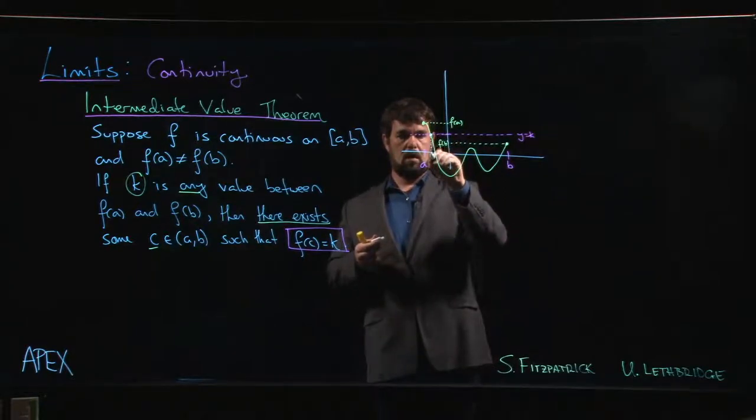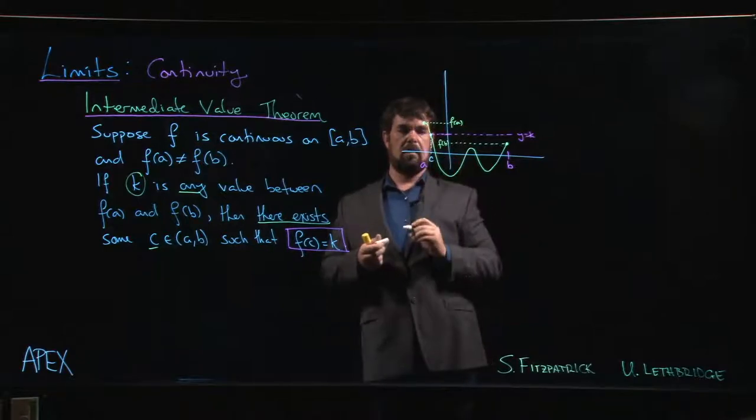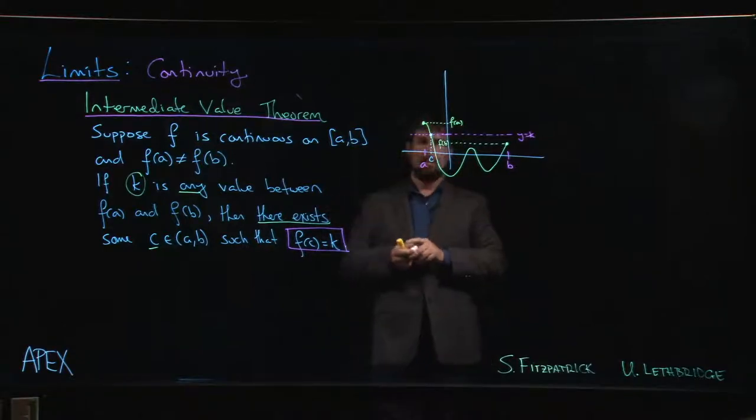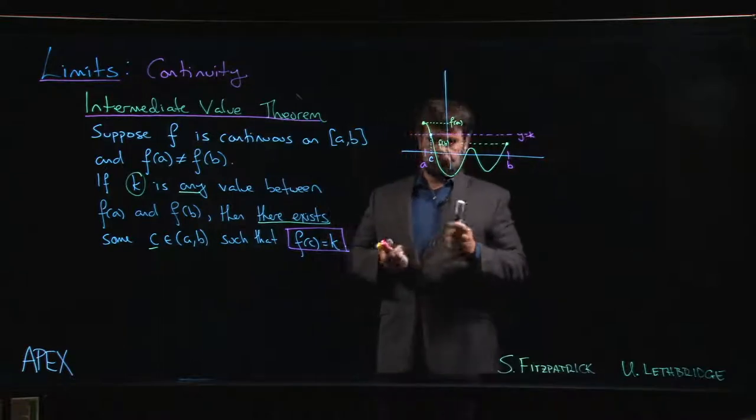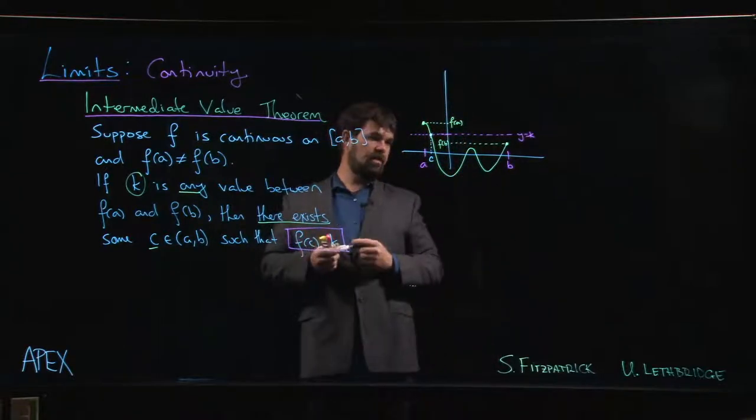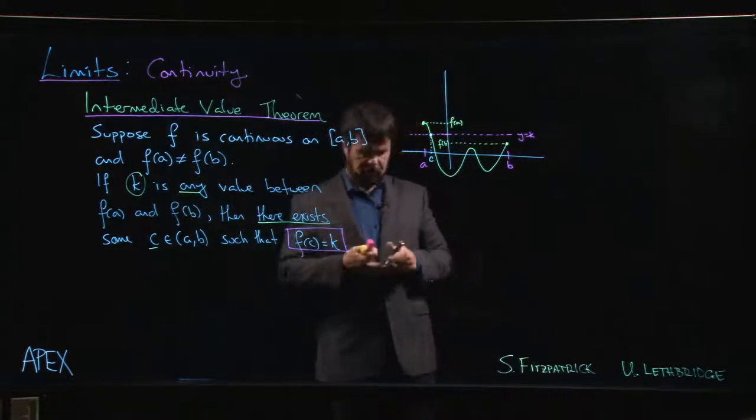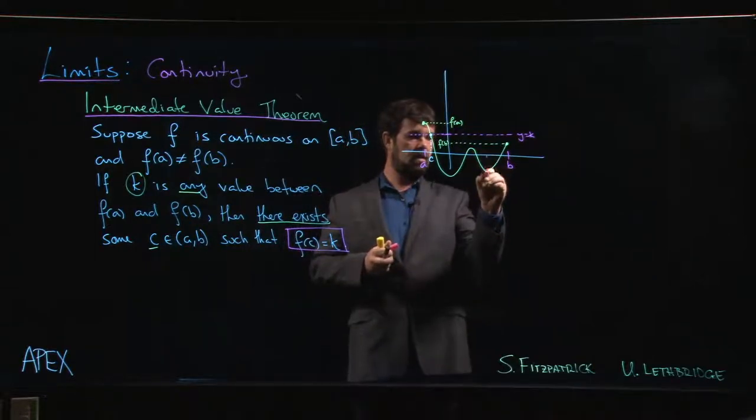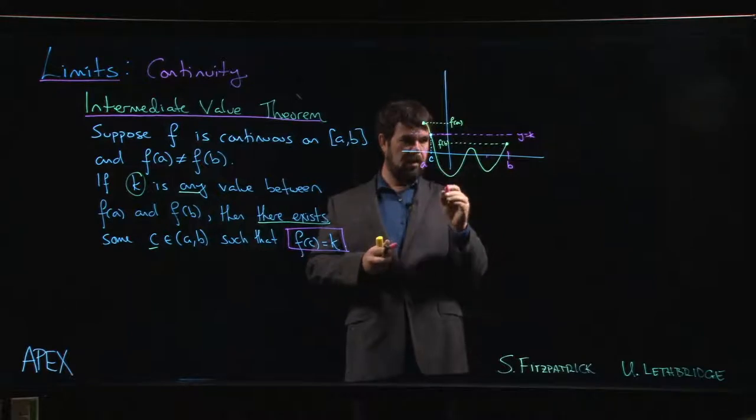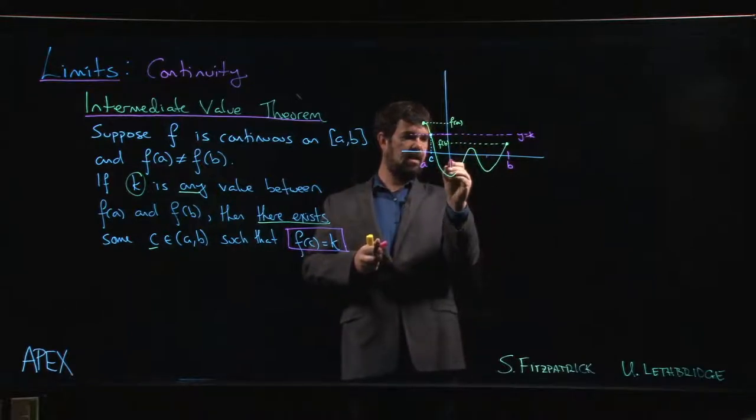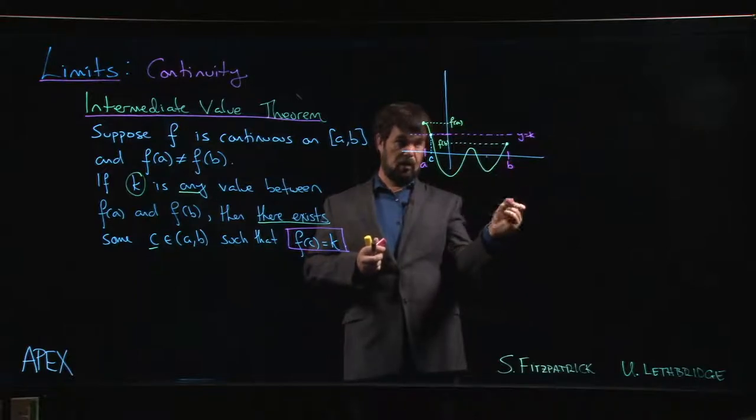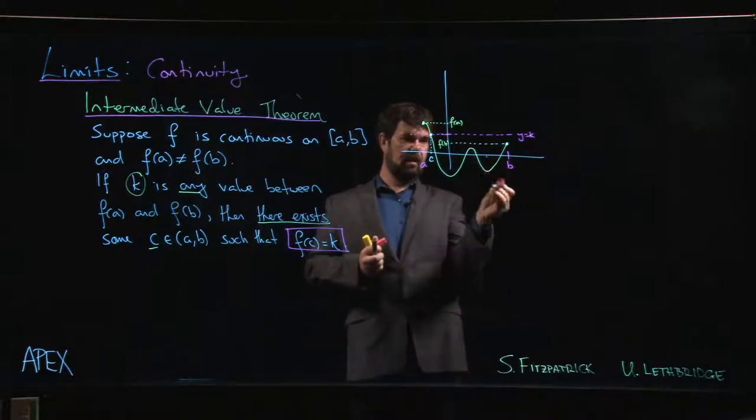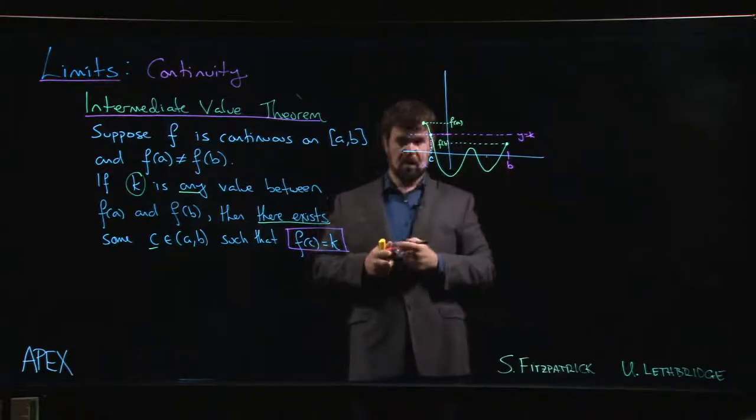We can see it right here. We have this point right there and we drop that down and that is our C. If I had chosen a different B, maybe I choose this as my endpoint, I bring B over here and now f of C is down there. I choose a K here, it might be that there are now in fact several values of C that work, several values of C that intersect that line.